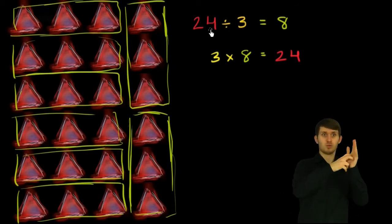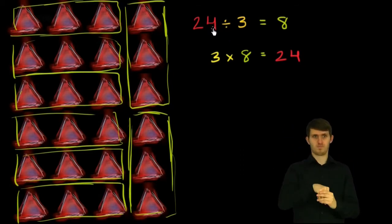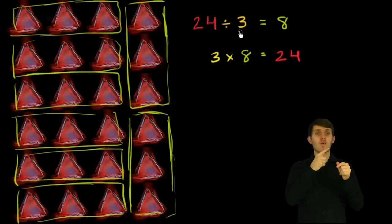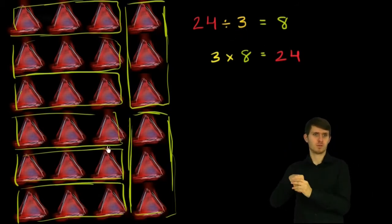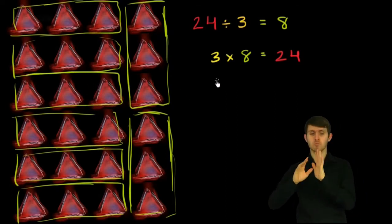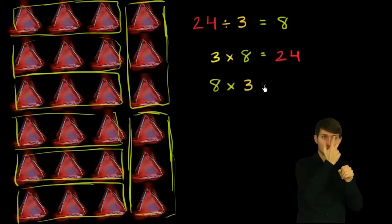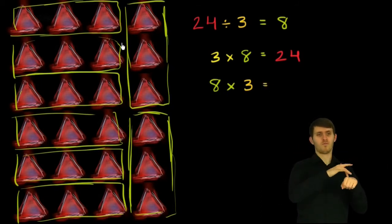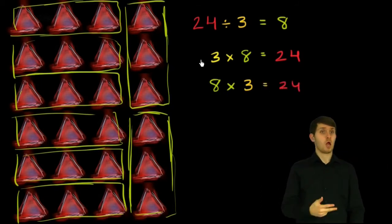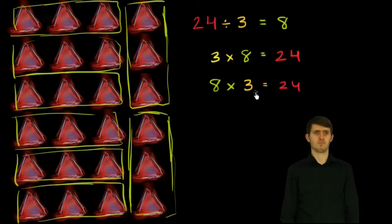So another way of viewing 24 divided by 3 is to divide 24 into groups of 3, and then you will have 8 groups of 3. If you want to express the same thing in terms of multiplication: if you have 8 groups of 3, that is also going to be equal to 24. Whether you have 3 groups of 8 or 8 groups of 3, either way you're going to have 24.